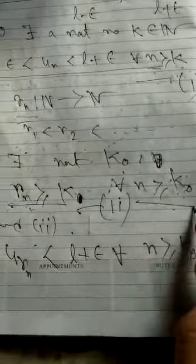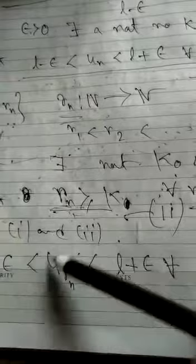For all n greater than or equal to K0, we can see rn greater than or equal to r equals to K. Since this is a strictly increasing natural number, there exists K0 such that for all n greater than or equal to K0, rn is greater.